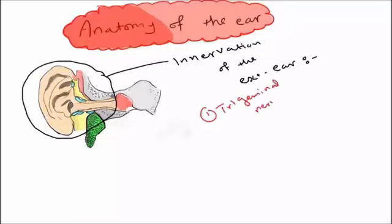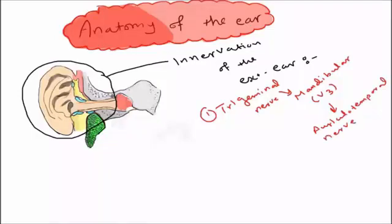And now with the innervation of the external auditory canal. We have number one, the trigeminal nerve. It gives a branch named the mandibular branch which is the lower part or V3 giving a branch named auriculotemporal nerve.